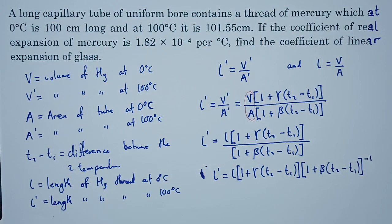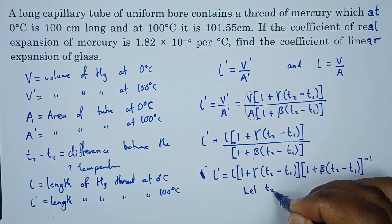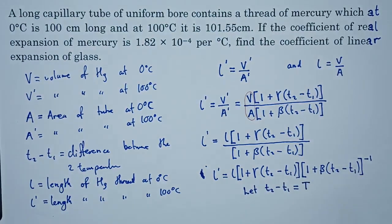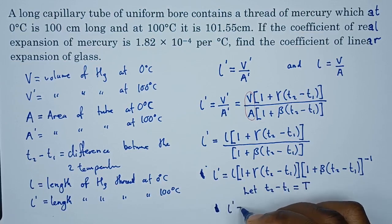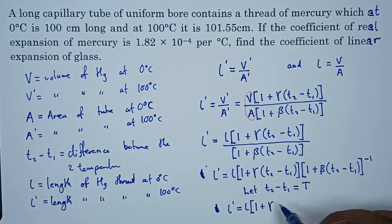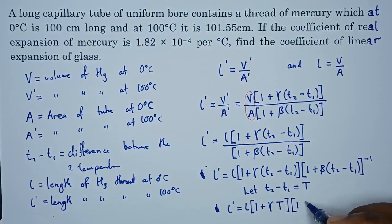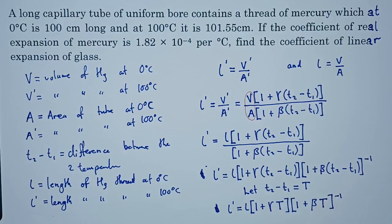For simplicity, let T represent T2 minus T1. So L prime equals L times (1 plus gamma T) multiplied by (1 plus beta T) to the power negative one.